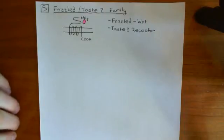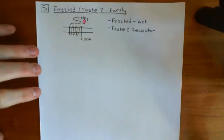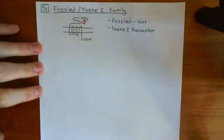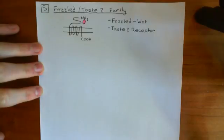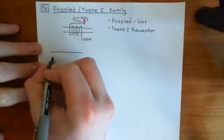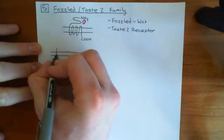Welcome back to this next video in which we are discussing the serotonin, or 5-hydroxytryptamine, receptors. We've now discussed the five different families of G-protein-coupled receptors, and we've seen that our serotonin receptors — those which are G-protein-coupled receptors — are all rhodopsin-family G-protein-coupled receptors, which means that the serotonin molecule is going to bind to the serotonin receptor within the transmembrane domains.